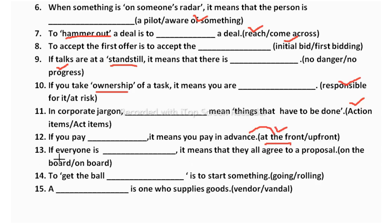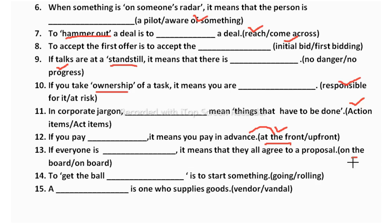If everyone is blank it means they all agree to a proposal — on the board or on board? The only difference is the article 'the,' but it totally changes the meaning. On the board means everyone agrees. On board means someone is boarding a flight or ship. So the correct answer is on the board.